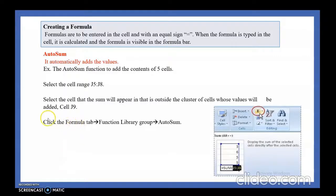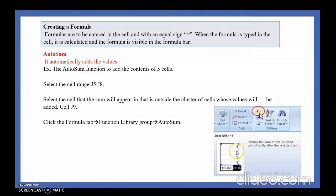Good morning, dear students. Today we are going to learn how to do AutoSum in MS Excel. What is AutoSum? AutoSum means it automatically adds values. Suppose 10 values are there and we want to add them automatically. One method is to type the formula manually, but that is not automatic. If you want to add automatically, you can use the AutoSum facility.